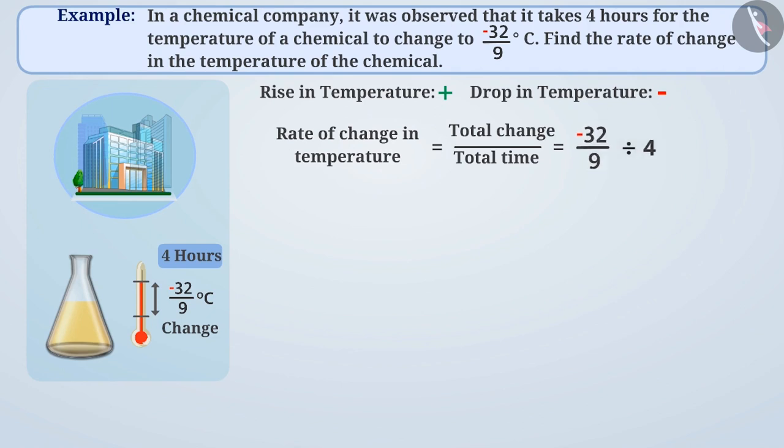To divide rational numbers, we write the dividend and multiply it by the reciprocal of the divisor. For example, here, we will keep minus 32 by 9 as it is and we multiply the inverse of the second number 1 by 4 with minus 32 by 9. To find the result of the multiplication, we multiply the numerators to get minus 32 and then multiply the denominators to get 36.